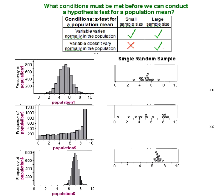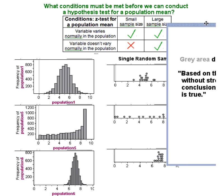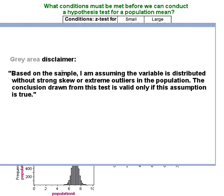Obviously eyeballing is not a very precise method. So if you proceed with the test and your sample size is less than 30, it's a good idea to include a disclaimer with the conclusion to your hypothesis test. You might want to say something like this: based on the sample I'm assuming the variable is distributed without strong skew or extreme outliers, in other words fairly normally, in the population.